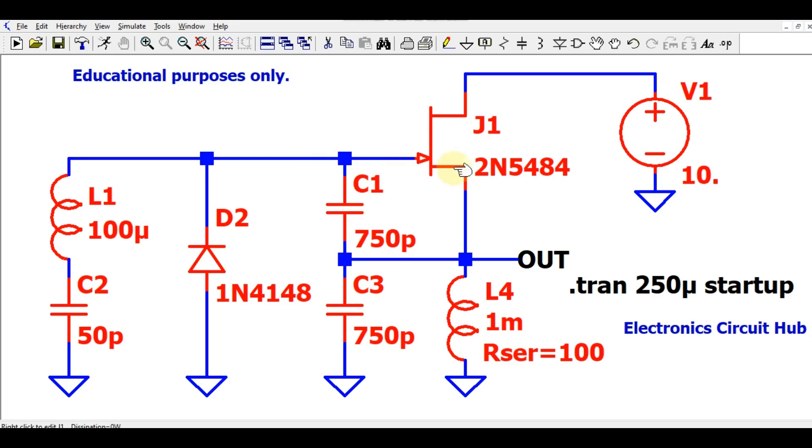You can see this circuit is made using the JFET. J1 is a JFET—junction field effect transistor—and the part number is 2N5484. You can see it is connected with the 10 volt DC supply.